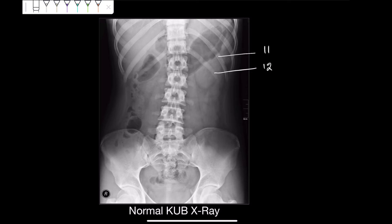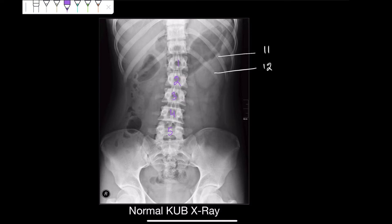Let me number them: you can see the first lumbar, the second lumbar, the third lumbar, the fourth, and the fifth lumbar vertebrae. After that, at the bottom of these vertebrae, you can see some vertebrae that have fused together, and this structure is called the sacrum.